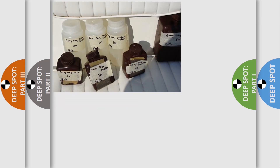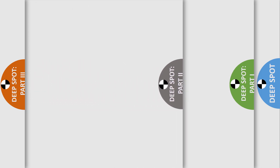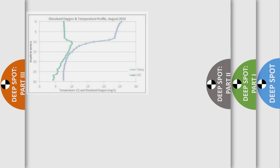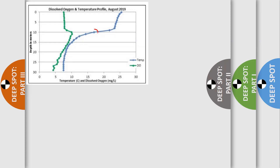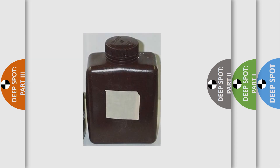Repeat this process for each depth sampled and place the sample bottles in a cooler with ice. The next sample you will collect is the chlorophyll A sample. This test estimates the amount of algae in the water column. The starting depth for your sample will be the mid-metalimnion for thermally stratified lakes, or two-thirds the total depth for unstratified lakes. You will fill the large brown bottle here. Note, this bottle does not contain acid.